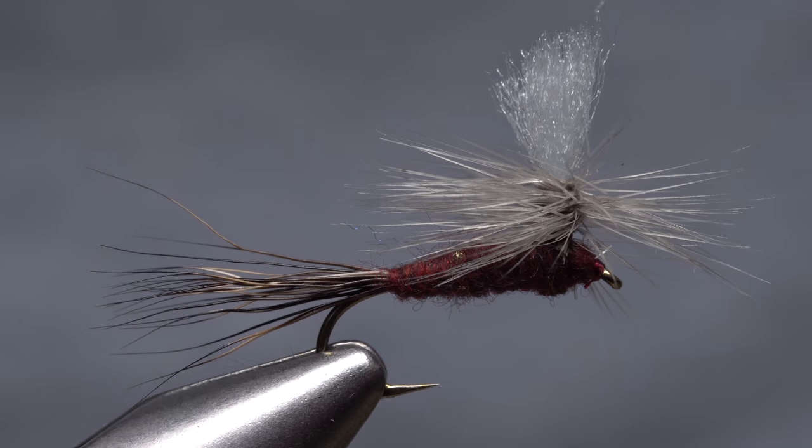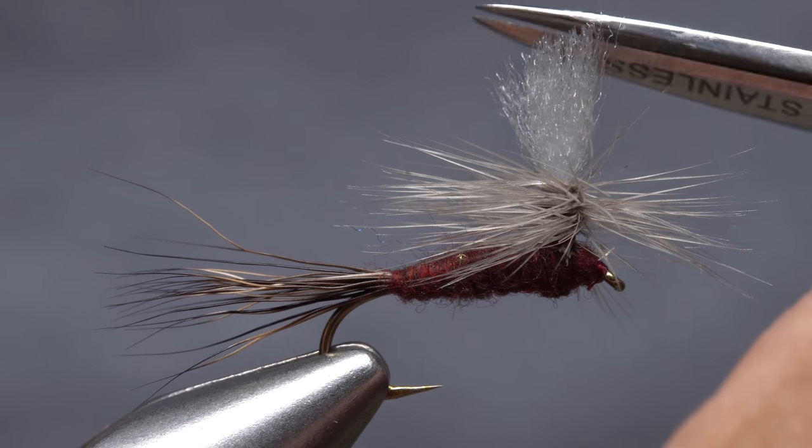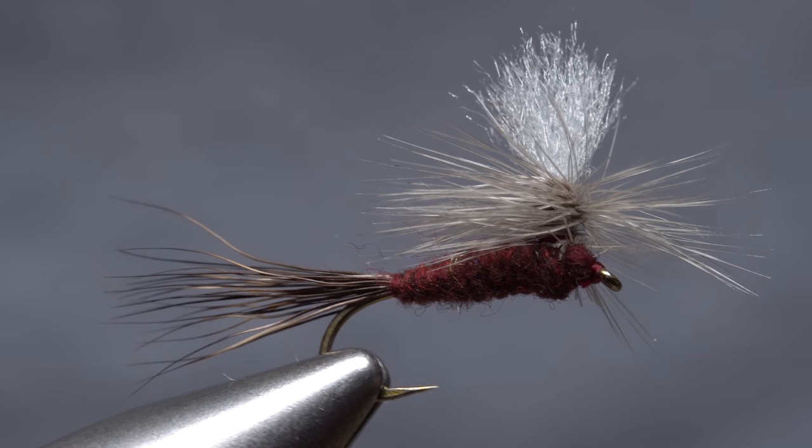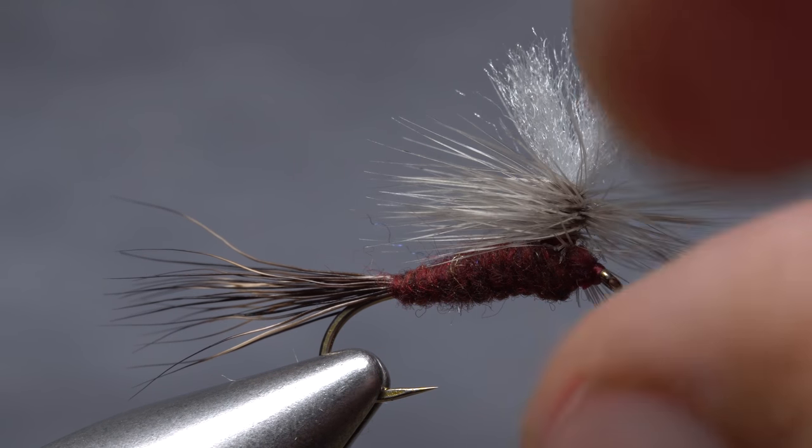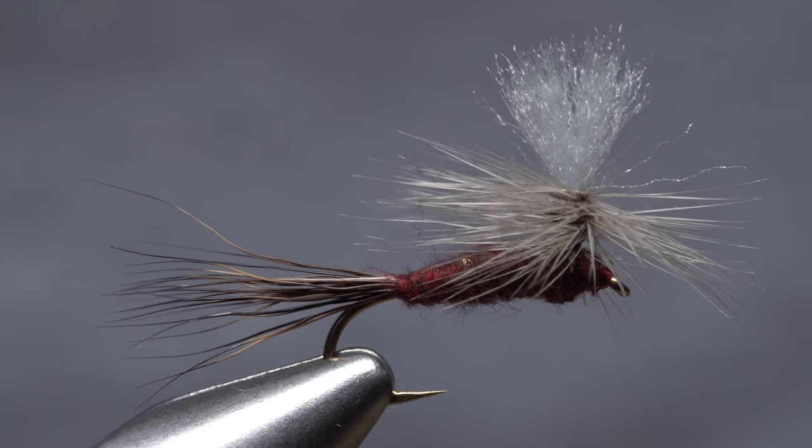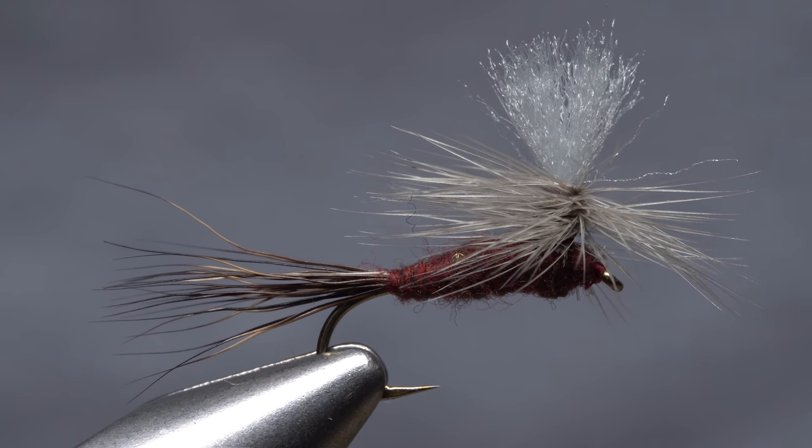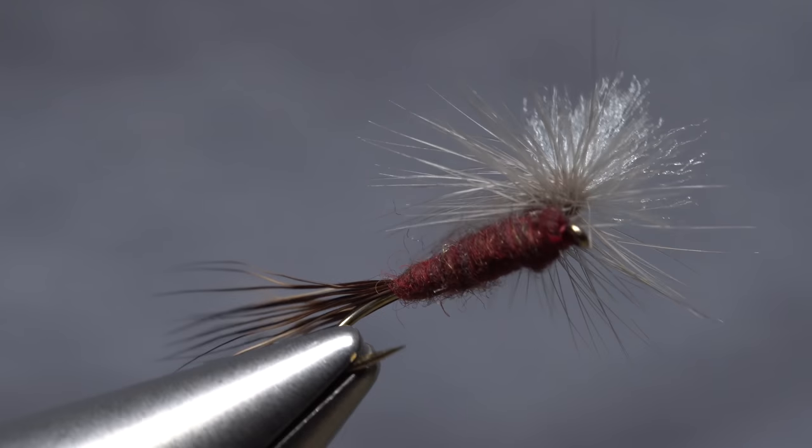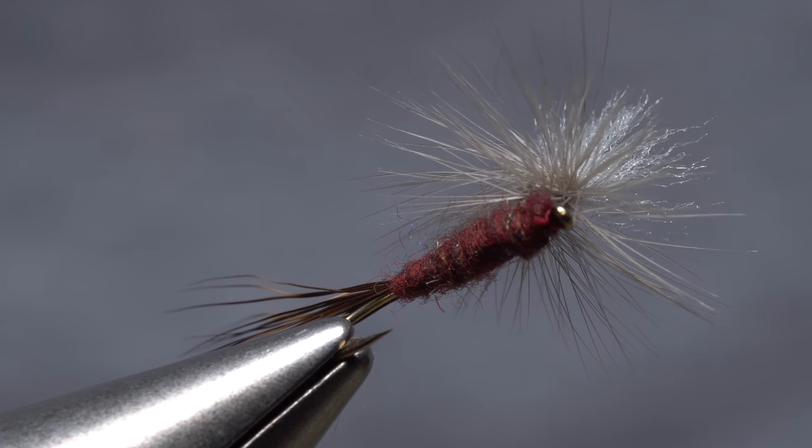Finally, trim the post to about a hook shank in length. I like to do this at an angle. As I said earlier, this is a guilty pleasure tie for me, mainly because the posting and hackle wrapping procedure is easy and kind of fun. I also really like how well this fly floats and how visible it is on the water's surface, even well into dark.